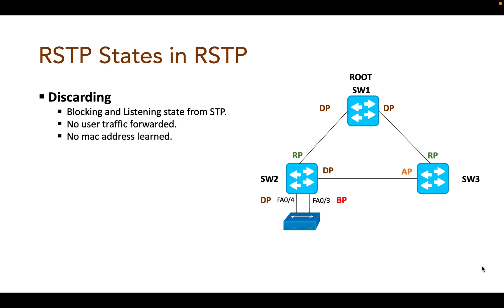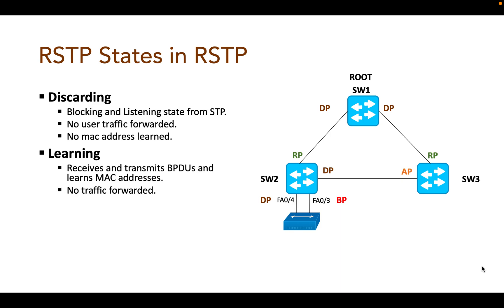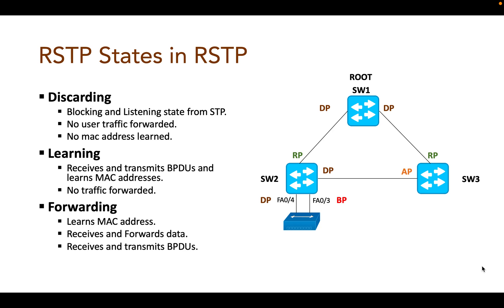The next state is learning state. In this state, the port receives and transmits BPDUs and learns MAC addresses but does not yet forward frames, same as in STP. The third state is forwarding state. In this state the port learns MAC addresses, receives and forwards data, and receives and transmits BPDUs, same as in STP. These are the states in RSTP.